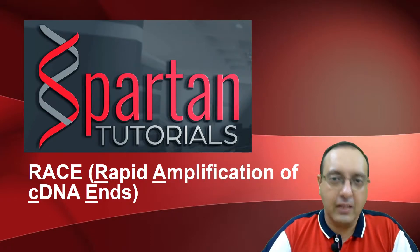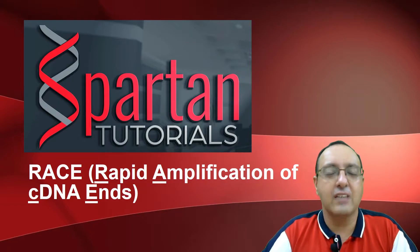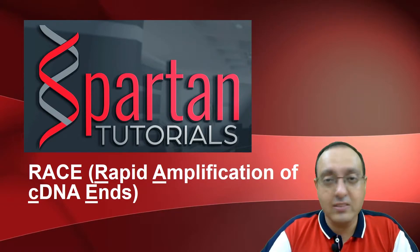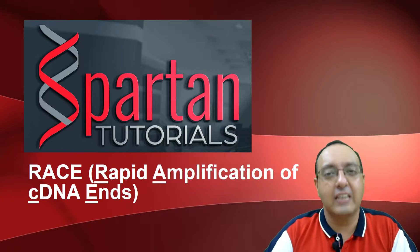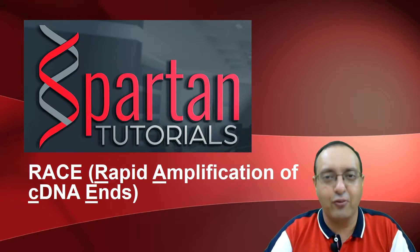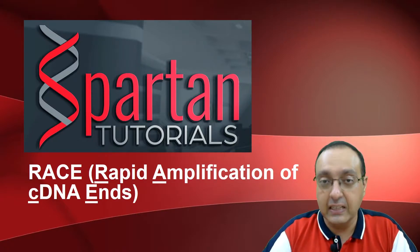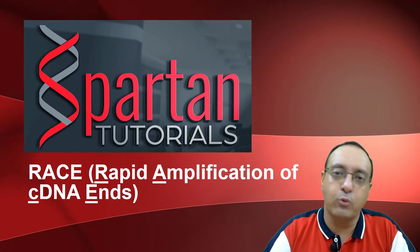These are Primer Extension Assay, S1 Nuclease Mapping, as well as RNase Protection Assay. But the gold standard or the most preferred technique, if you can afford it and if you can apply it in the lab, is called Rapid Amplification of cDNA Ends or RACE. It can be helpful to determine both the